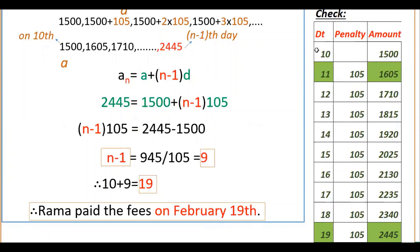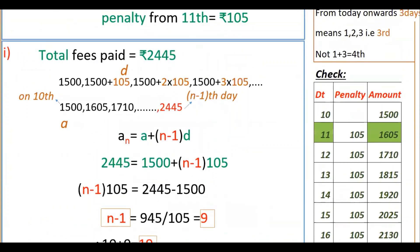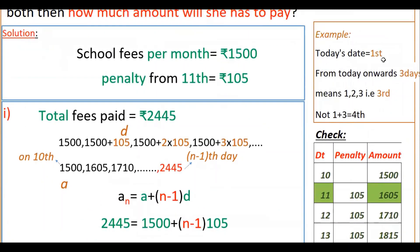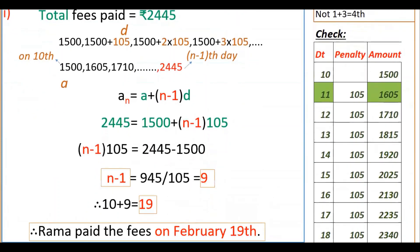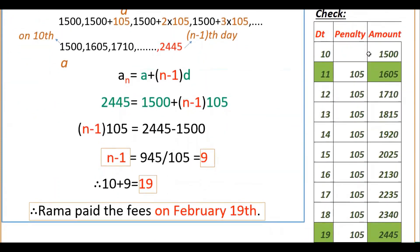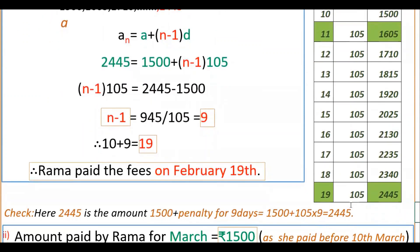If you see this table, you will understand. For example, from today's date, three days means day one, two, three — that is the third day, not one plus three (which would be the fourth day). That is why we take N minus one. In the table, on the 10th day there is no penalty, so the amount is 1500. From the 11th day onwards, the penalty of 105 rupees starts. Adding it up, on the 19th day the amount becomes 2445 rupees. So Rama paid the fees on February 19th.